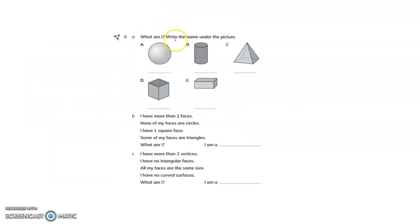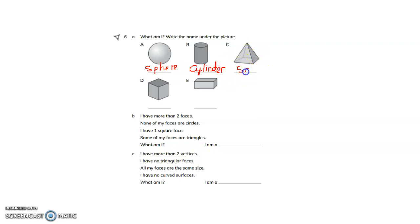Now, what am I? Write the name under the picture. It is a sphere. The next one is a cylinder — C-Y-L-I-N-D-E-R, cylinder. Now, this is a pyramid. It has a square base, so this is a square-based pyramid.